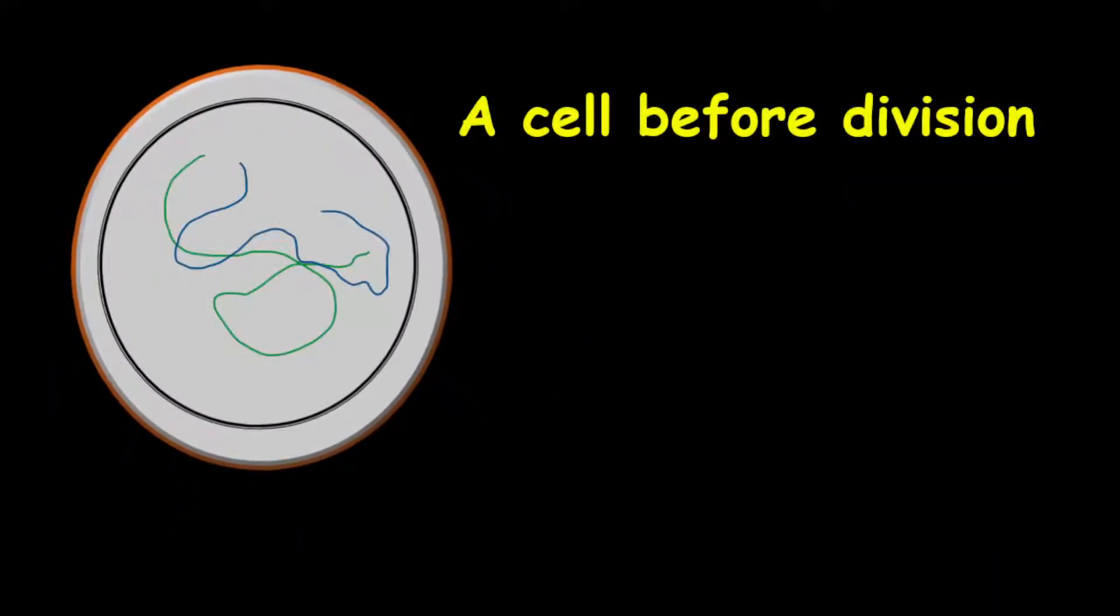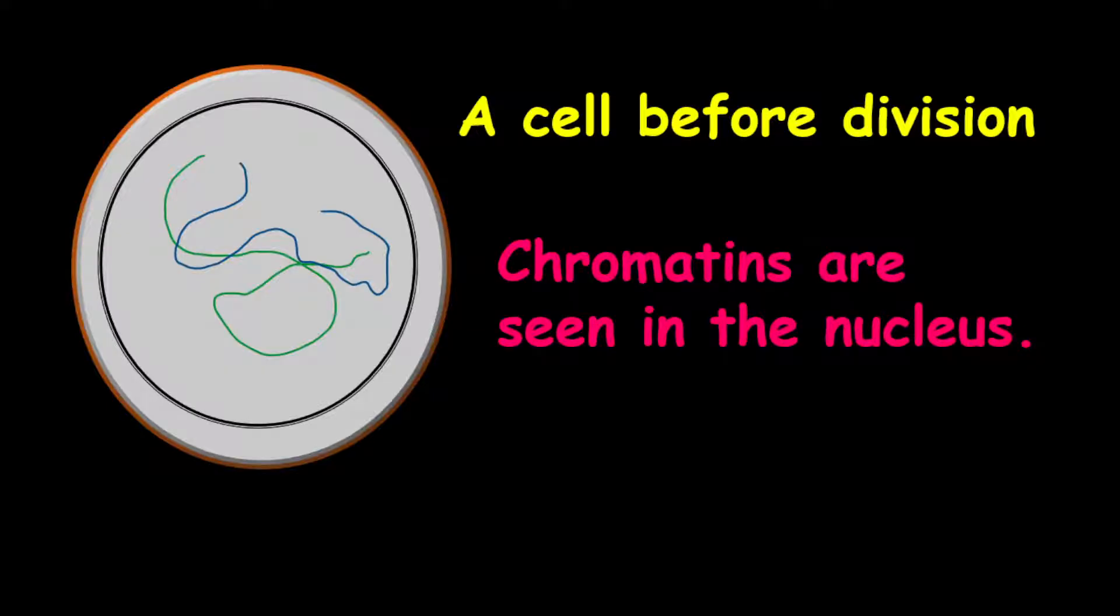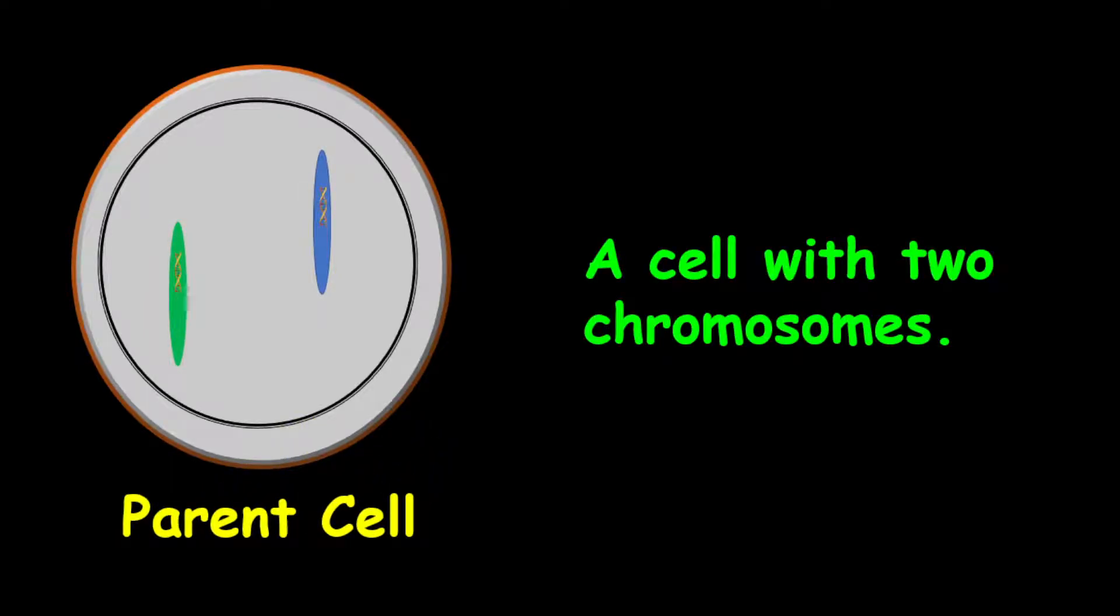First thing first, before a cell divides, what you're seeing in the nucleus are chromatins, not chromosomes. However, for today's example, we are going to look at a parent cell with two chromosomes.